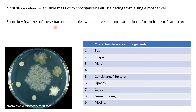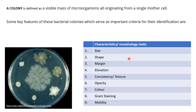Remember this definition — it may come up in viva questions or practical spotting. There are generally nine characteristics used for noting down the colony morphology: size, shape, margin, elevation, consistency or texture, opacity, color, gram staining, and surface appearance.